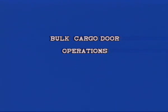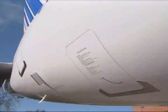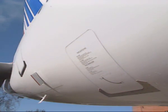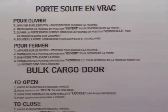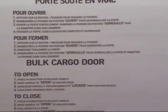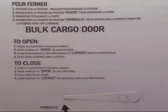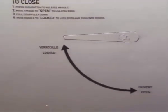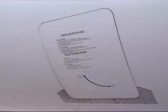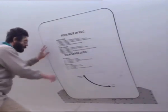Bulk cargo door operation. The bulk cargo compartment door is installed on the lower right side of the fuselage. The bulk door is a manually operated door. The operating procedures are labeled on the door. To open the bulk door: